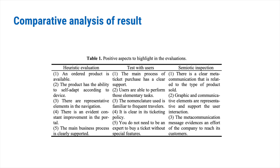In the test with users: the main process of ticket search has clear support; users are able to perform two elementary tasks; the nomenclature is familiar to frequent travelers; ticketing policy is clear; and you do not need to be an expert to buy a ticket without special features. In the semiotic investigation: there is clear metacommunication related to the type of product sold, graphic and communicative elements are representative and support user interaction, and the communication message evidences the company's efforts to reach its customers.